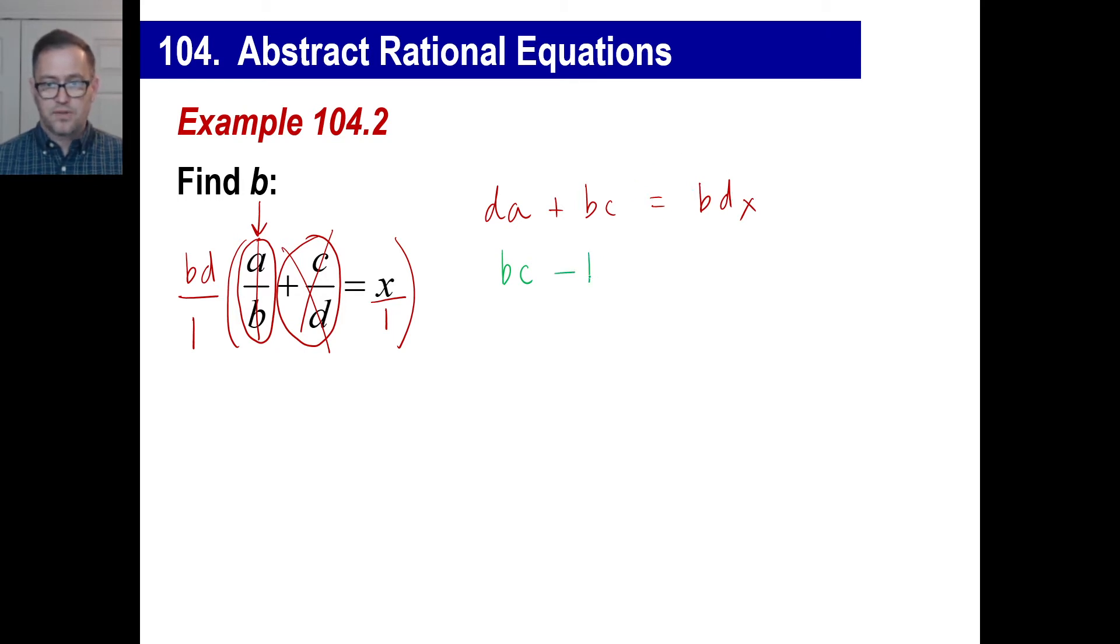We have minus B, D, X, because we changed sides. Okay? This needs to go away. It becomes negative D times A. Alright. What do you remember about how we solved it? What's next?